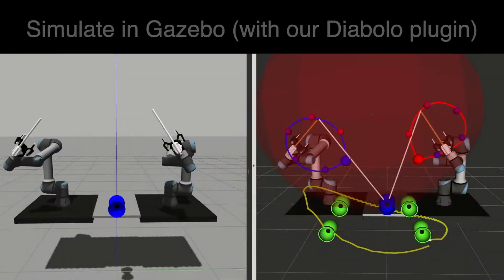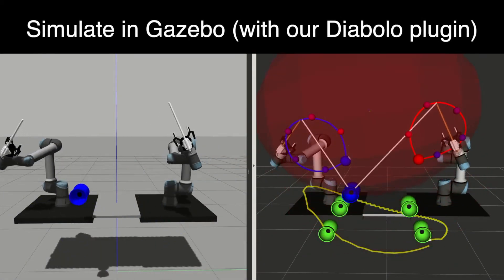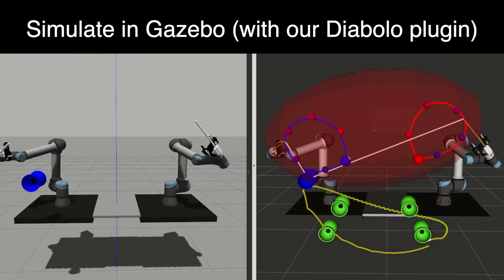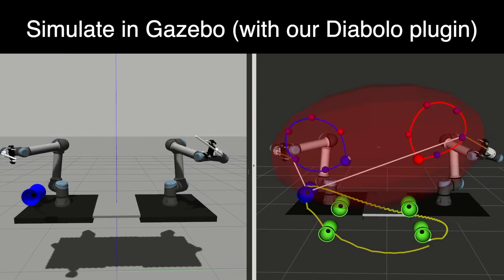Next, you can simulate the diabolo in Gazebo, you can run all of this in simulation, and plan motions to make the diabolo move a certain way, like the circular motion or throwing. Optimizing those motions is also part of the code.